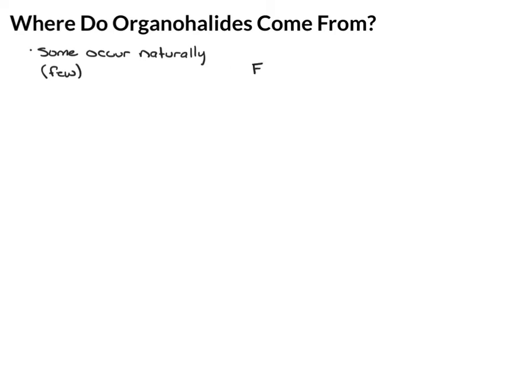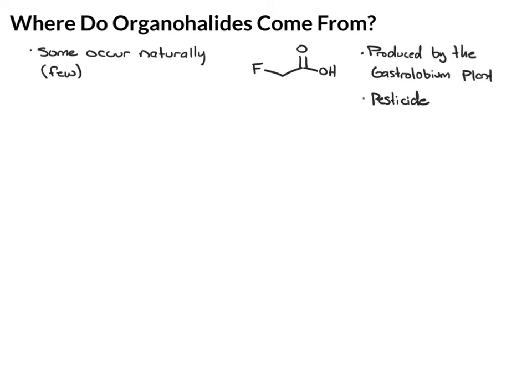Here's one such example: fluoroacetic acid. It's produced by the gastrolobium plant, a plant mostly present in Australia. The reason it produces this particular molecule is because it's a natural pesticide — by producing it, the plant can naturally keep pests away. In fact, the sodium salt of this, where the carboxylic acid proton is replaced by sodium, is used as a commercially available pesticide.